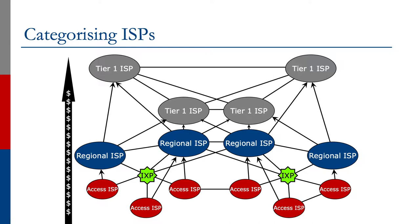On the left of the diagram there is an arrow with dollar symbols in it, indicating the flow of money. The end user pays the access ISP for internet access. The access ISP will buy transit from the regional ISP, and the regional ISP will buy transit from the tier 1. The tier 1 by definition buys no transit from anyone.